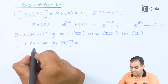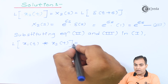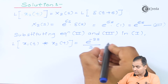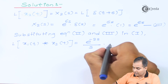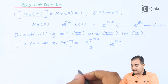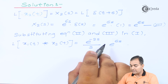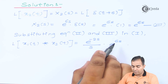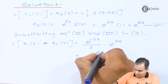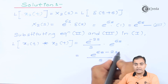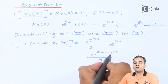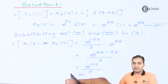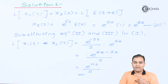Substituting Equations 1 and 3: the Laplace transform of x1(t) convolved with x2(t) equals X1(s) × X2(s) = [e^(-2s) / s] × e^(6s). Since the base is the same, the exponents are added: e^(6s - 2s) / s = e^(4s) / s. This is the final result of the convolution.